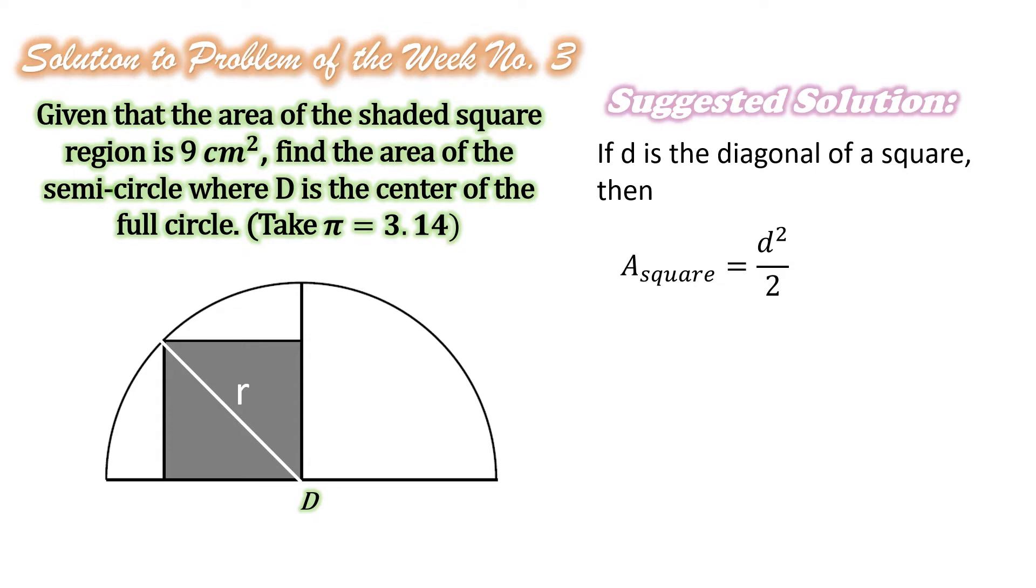Where D is the diagonal or the length of the diagonal of the square. In our problem, this is given as 9 squared centimeters. So, D squared over 2 is equal to 9. Multiplying both sides of this equation by 2, we get D squared is equal to 18.